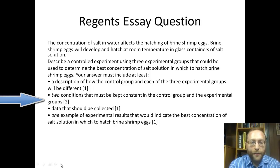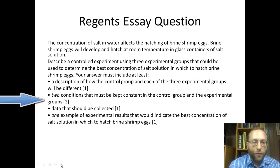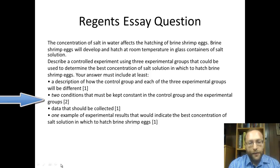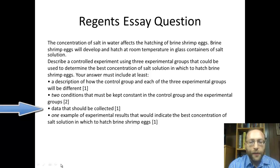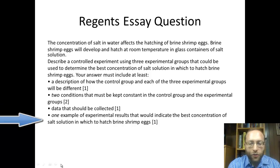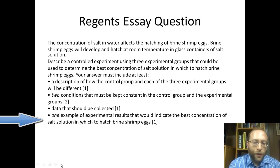For the second bullet — two conditions that must be kept constant — one would be the type of brine shrimp, as there are many types. Another would be the pH or acidity of the water, because that could also affect hatching. Temperature is also mentioned and should be kept constant. The data that should be collected would be the number of eggs that hatch. An example of results indicating the best concentration would simply be that one concentration has more eggs hatched than all other concentrations and the control.